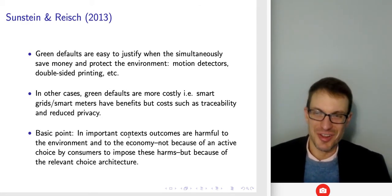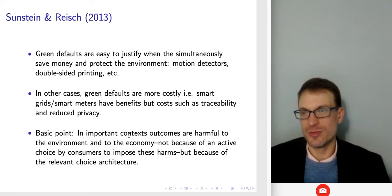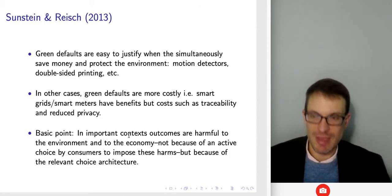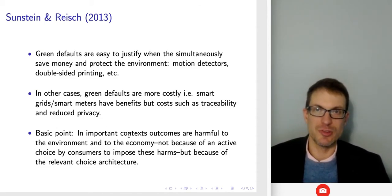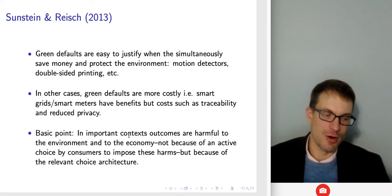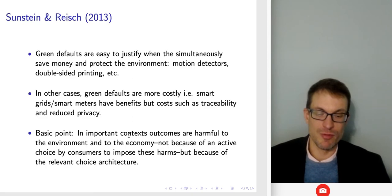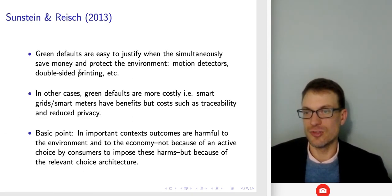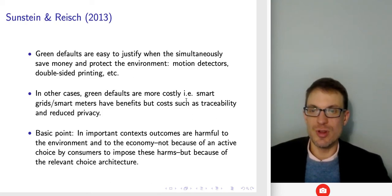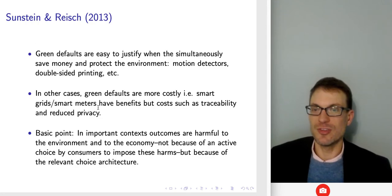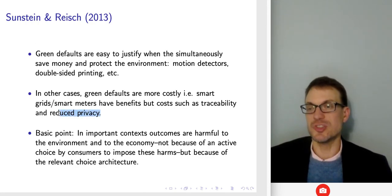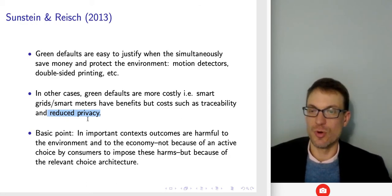Green defaults are easy to justify when they simultaneously save money and protect the environment — like double-sided printing. In other cases, green defaults might be more costly, like smart grids and smart meters, but have tradeoffs like traceability and reduced privacy. Privacy is something really interesting, especially relative to this course.